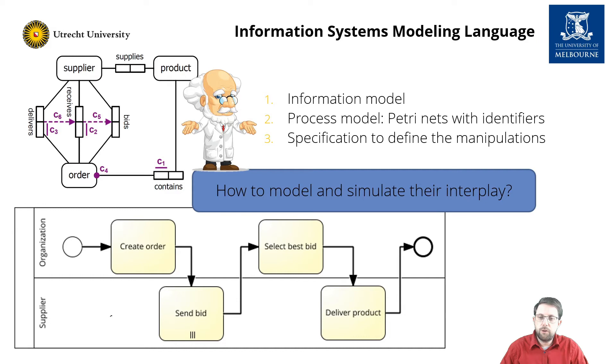First, we have an information model using finite set relations and constraints in first order logic. Second, we have a process model in the form of a Petri net with identifiers. And third, we have a specification that defines how the process model manipulates the information model.